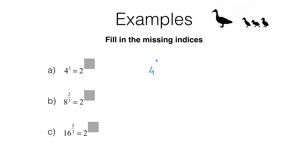So we start with 4 to the power of 3 and that's going to equal 2 squared to the power of 3. All I've done here is rewrite the 4 as 2 to the power of 2, because I want to end up with a base of 2. Now what we've got is a power raised to a power, and we know that we can simply multiply these indices. So 2 squared all cubed is actually 2 to the power of 2 times 3, which is 6. So 4 cubed equals 2 to the power of 6, and that means the missing index is 6.